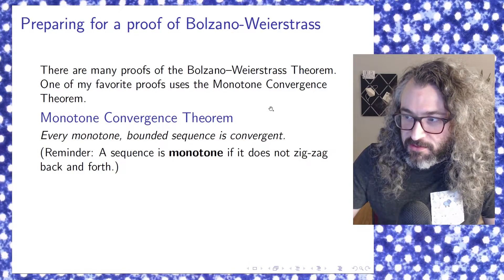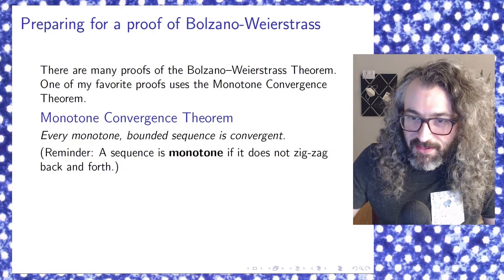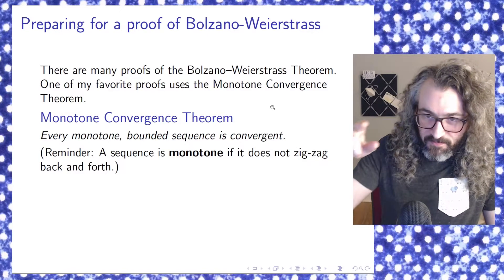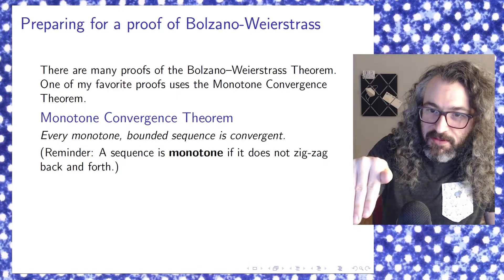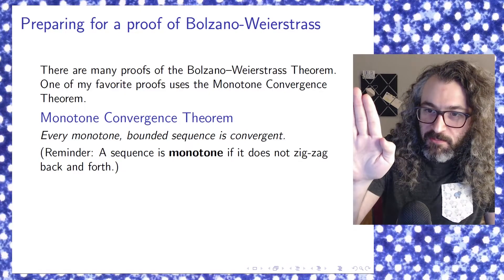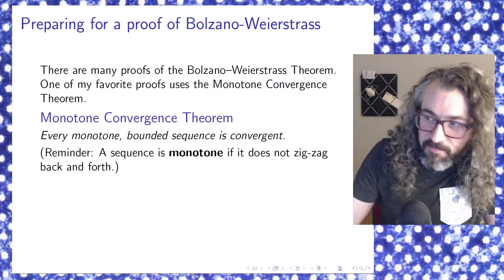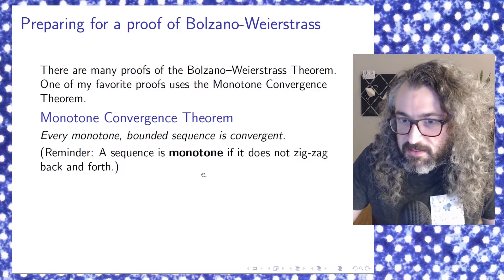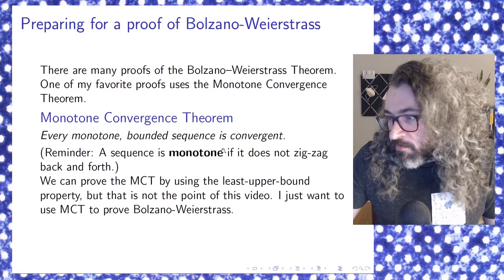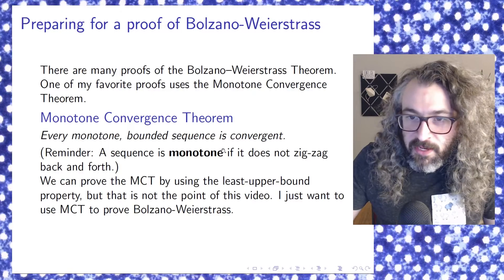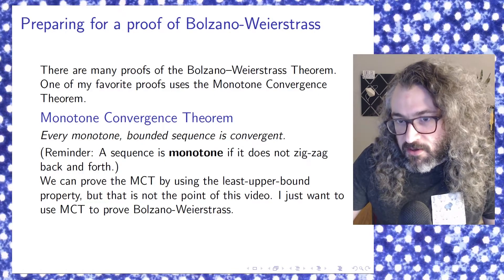A sequence is monotone if it does not zigzag back and forth — what I really mean is a sequence is monotone if whenever it goes up, it's never allowed to go down, and if it ever goes down, it's never allowed to go up. There are two options for monotone sequences: monotone increasing and monotone decreasing. And the monotone convergence theorem says if you're monotone and you're bounded, then you have to be convergent. You can prove the monotone convergence theorem using the least upper bound property, but I want to use it here to prove the Bolzano-Weierstrass theorem.